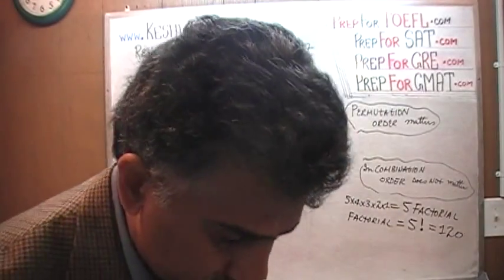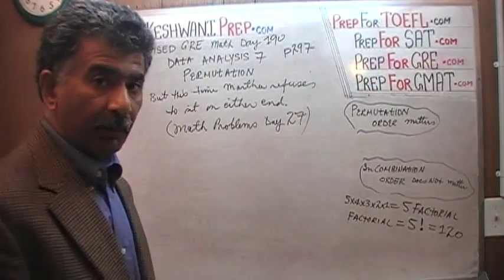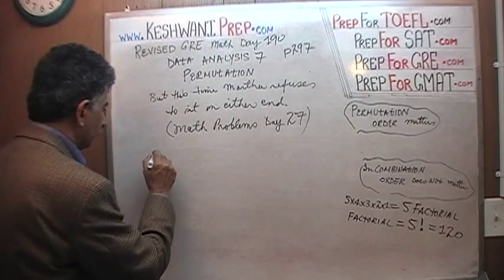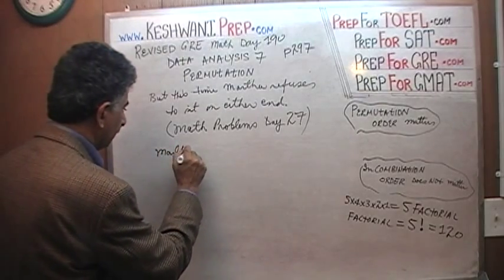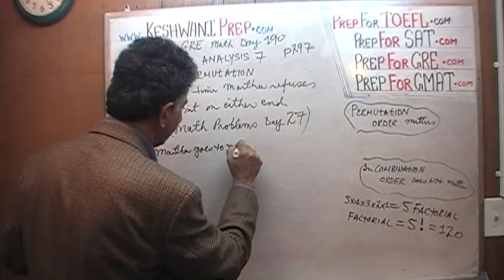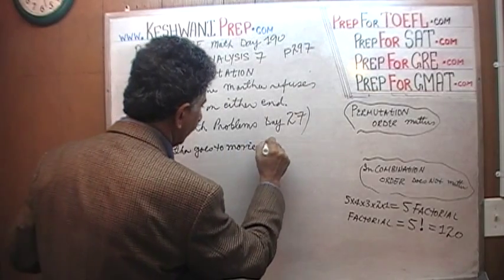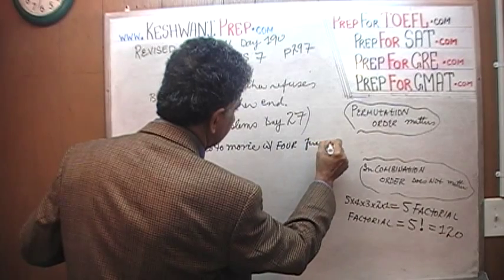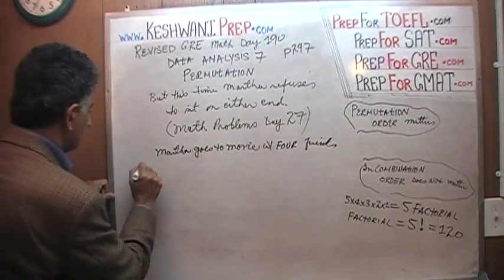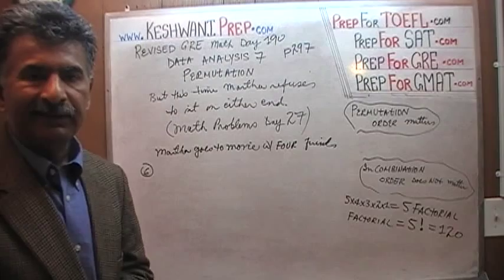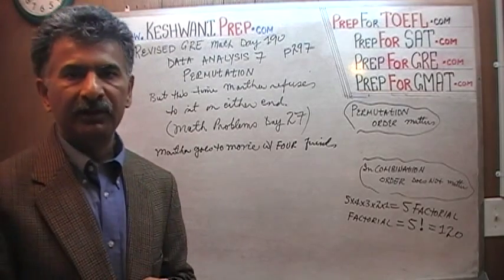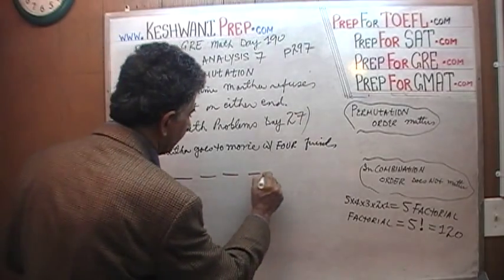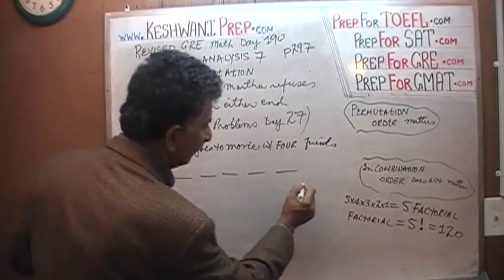Problem number 7 actually is a continuation of problem number 6. So let's begin our story with problem number 6. In problem number 6, Martha goes to a movie with 4 friends. The question was, how many different ways can they sit in the movie theater?